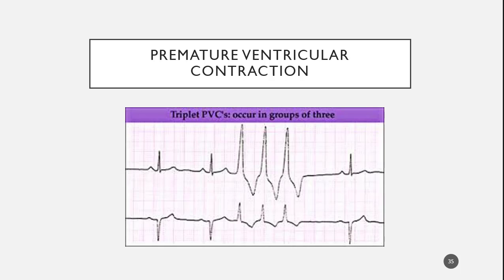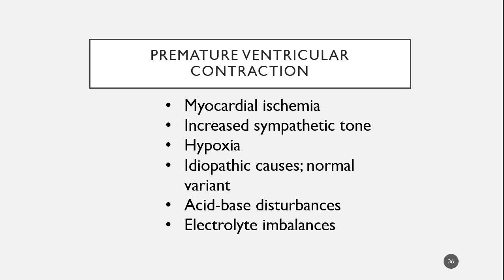So these are triplets, and if we had four of them, what did I say we would call it? A short run of VTAC. So as we're looking at causes, this is a pretty important slide — you might want to keep it.